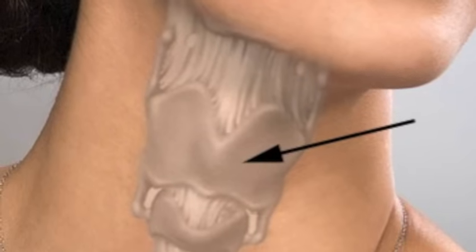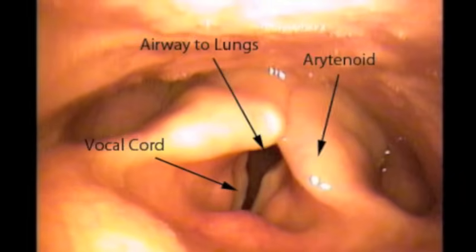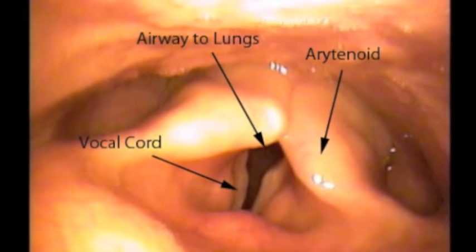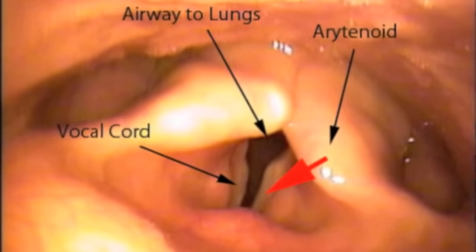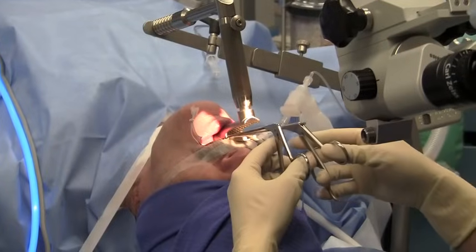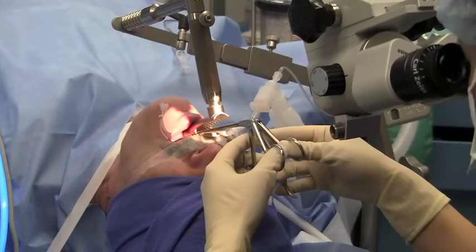A final source of a snore can come from the voice box itself. In the prior clip, you saw the mucosal folds above the vocal cords known as the arytenoids collapsing into the airway and vibrating, causing a snore. If such structures are the source of a snore, they can be trimmed surgically.